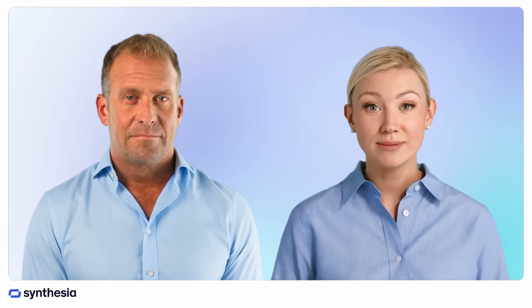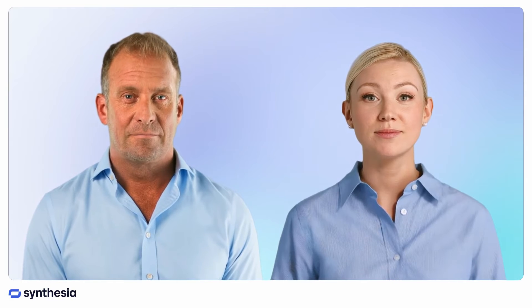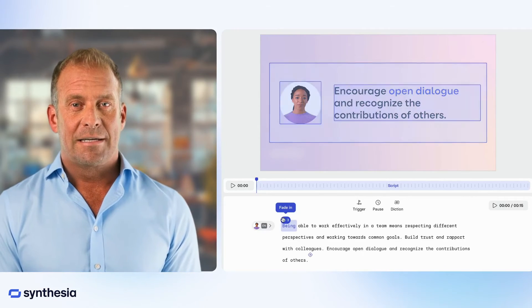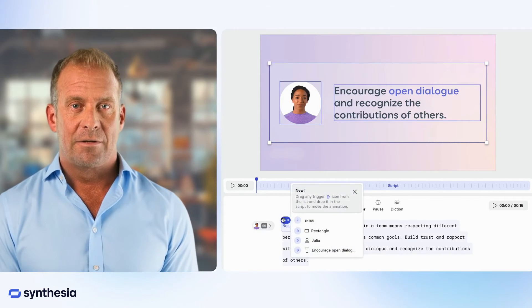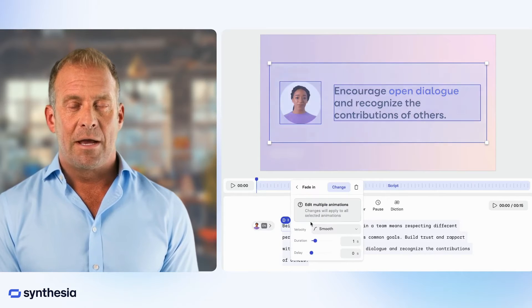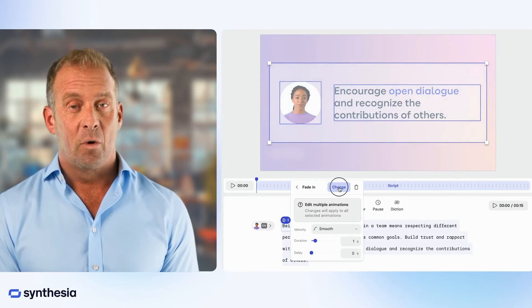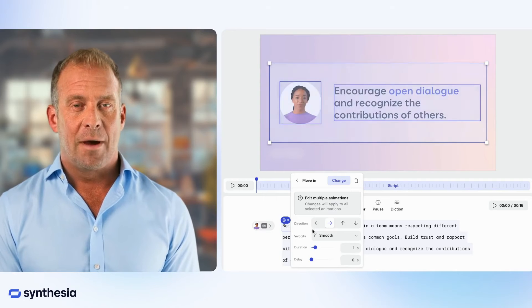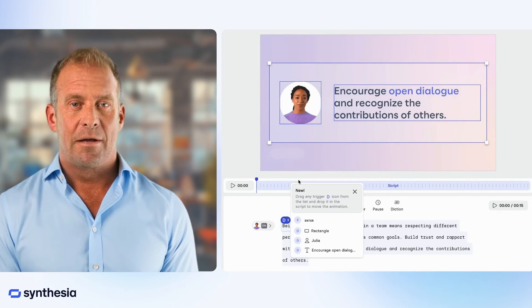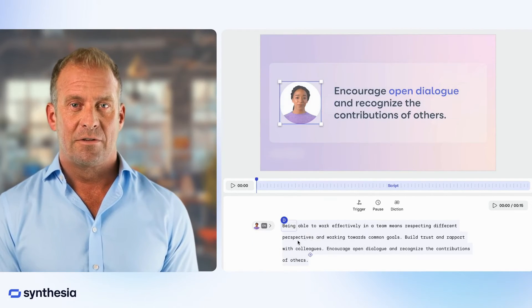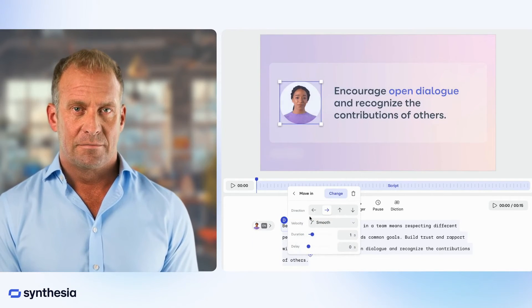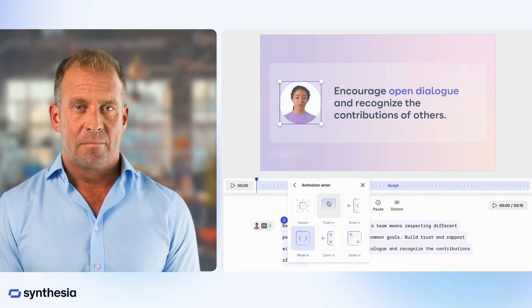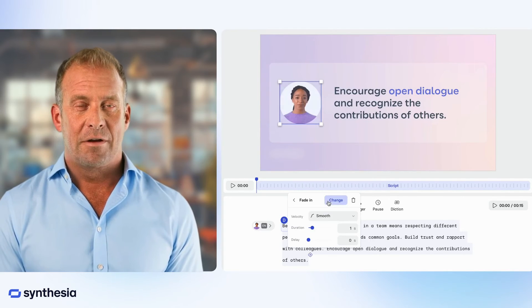Any other nice tricks? Sure, let me show you how to edit existing animations. To edit existing animations, click the trigger. You can change the enter animation style for all elements at once. You can also edit each element individually by clicking their respective trigger. Look — elements appear differently.